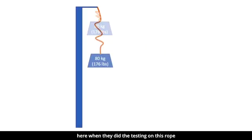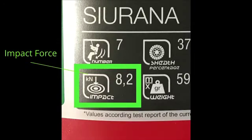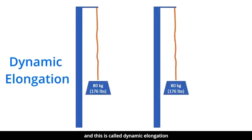Here when they did the testing on this rope, the max impact force was measured at 8.2 kilonewtons. Now the impact force is gonna be affected by how dynamic or stretchy the rope is, and this is called dynamic elongation.